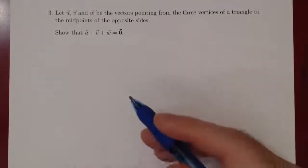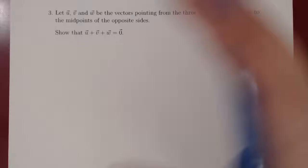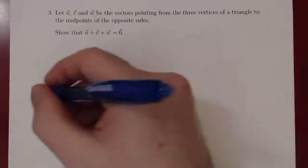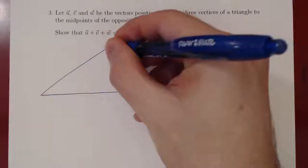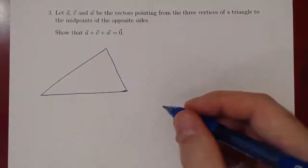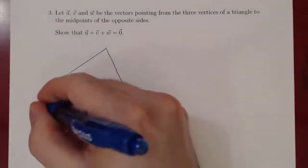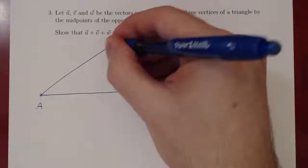As always, we first draw a picture. So what do we have? We have this triangle, and you can draw any triangle, it doesn't matter. Let's just go with this following picture. Let's label our vertices, right, this is say vertex A, vertex B, vertex C.